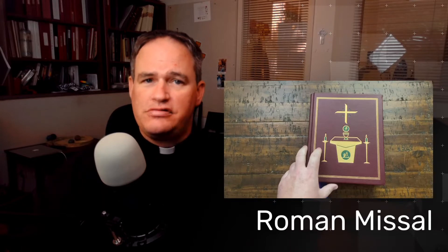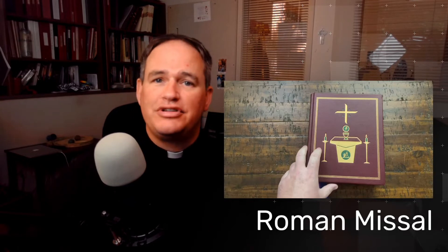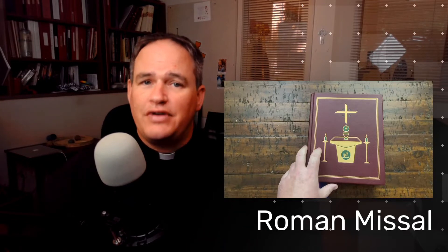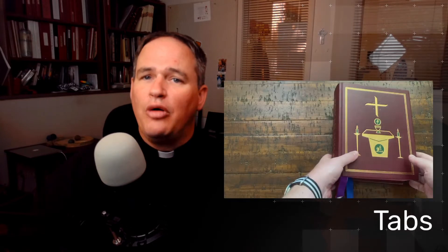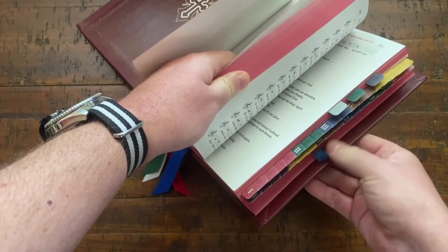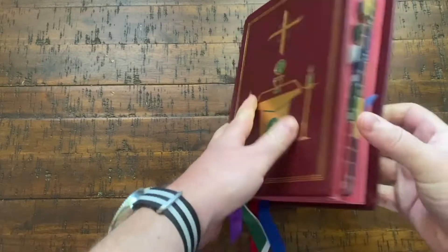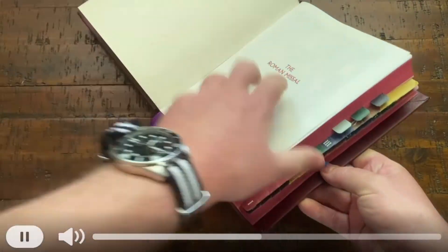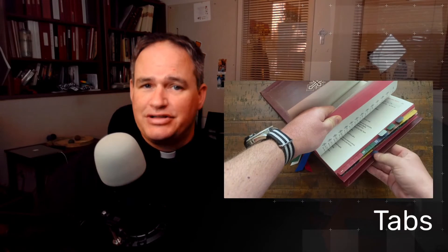Some people have referred to this as the Bible. This is not, in fact, the Bible. This is just a book with instructions for how to say Mass. The book is designed to help us say Mass. For those areas we use a lot, the book has tabs on the side so that you serving Mass or the priest saying Mass can quickly and easily find places they come back to over and over again, no matter what type of Mass they're saying.